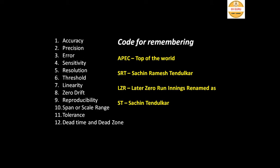The code is EPIC SRT LZR ST — where EPIC means 'top of the world' (Sachin Tendulkar's status), and SRT stands for Sachin Ramesh Tendulkar. Decoding: A = Accuracy, P = Precision, E = Error, I = (implied), C = Sensitivity or resolution, S = Sensitivity, R = Resolution, T = Threshold, L = Linearity, Z = Zero drift or reproducibility, R = Reproducibility, S = Span or scale range, T = Tolerance, and at the end Dead time and Dead zone. These are the 12 static characteristics of an instrument.